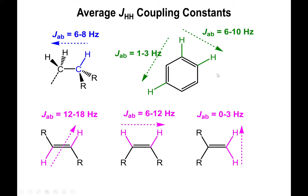With the alkene, something else is also interesting to notice with respect to the specific configuration — the stereoisomerism. As you well know, alkenes can be in the trans configuration, the cis configuration, or they could even be geminal, like when you have the two groups on the same carbon of the alkene. What turns out to happen is that for the trans configuration, the coupling constant is the highest — 12 to 18 Hz. The cis configuration has less interaction, and then the geminal is the lowest.